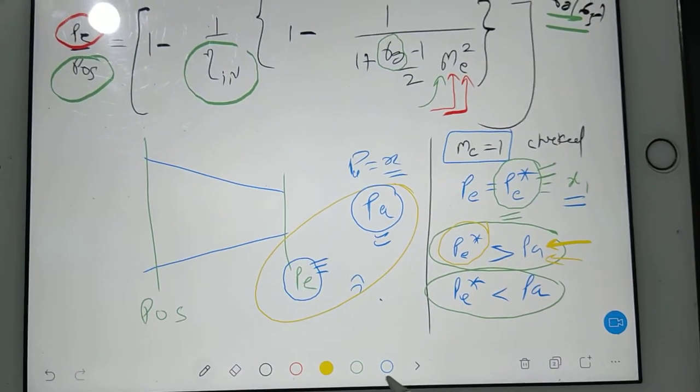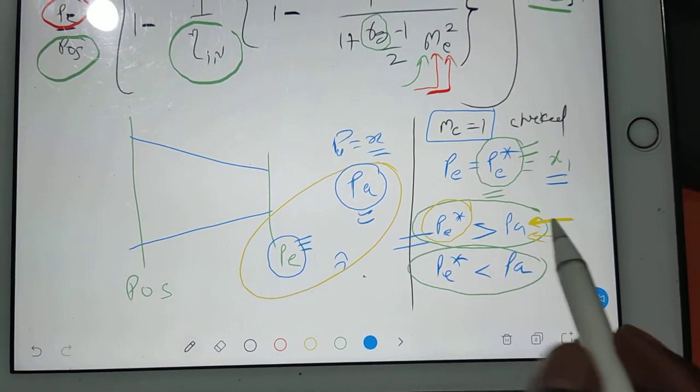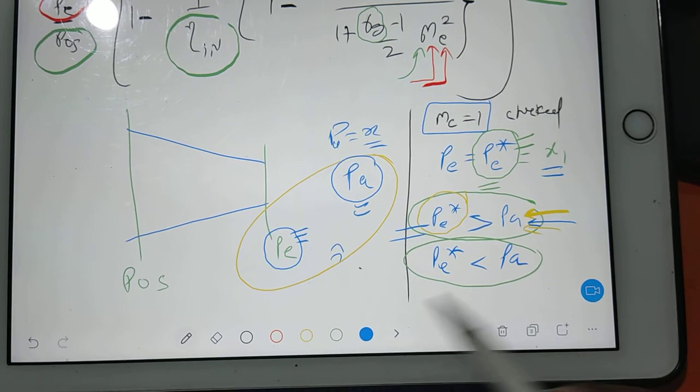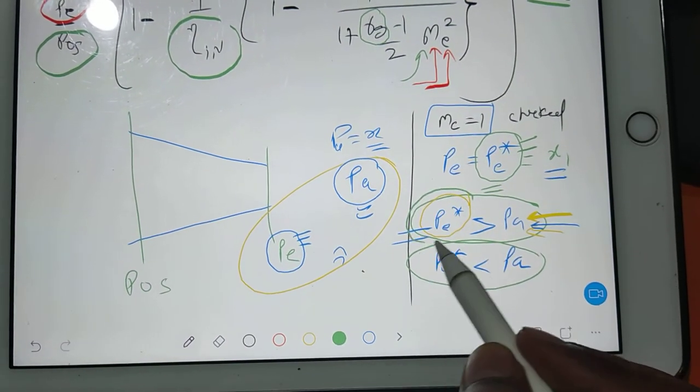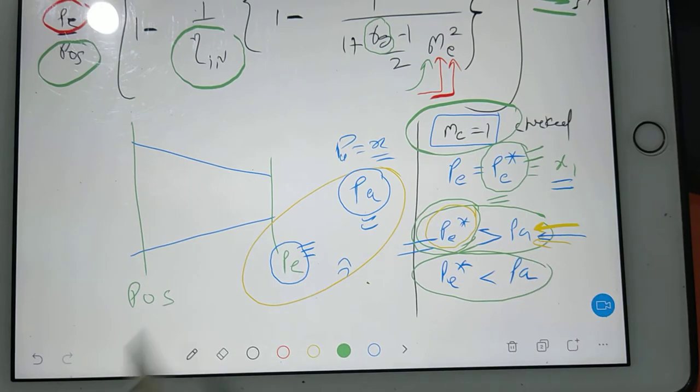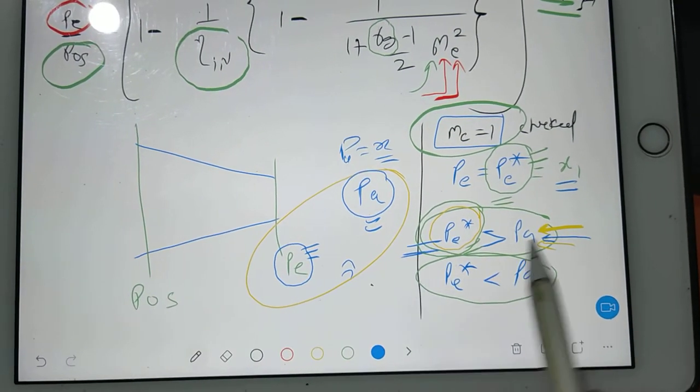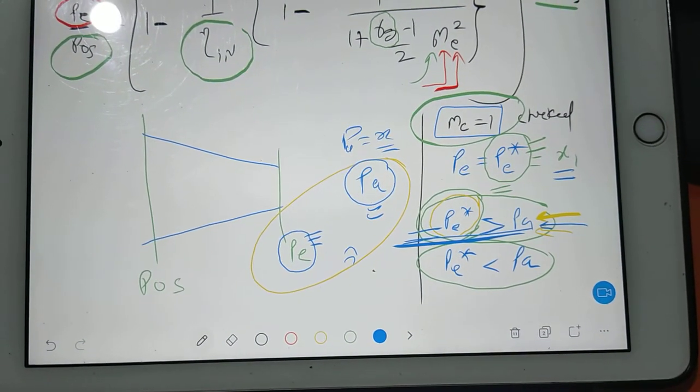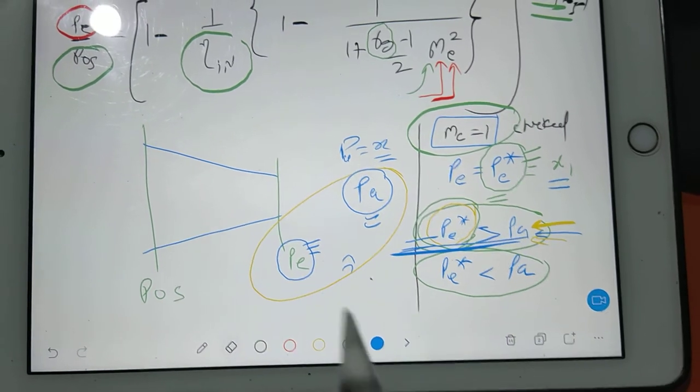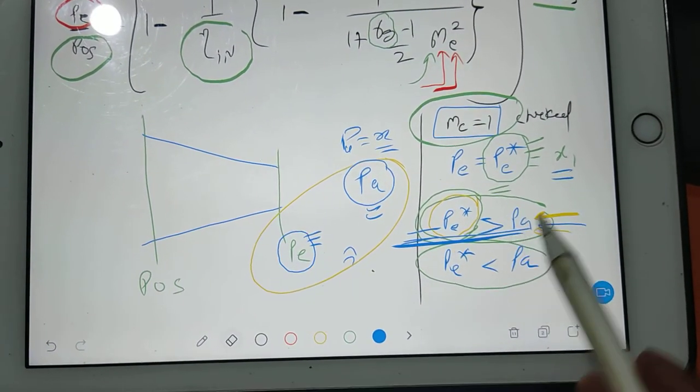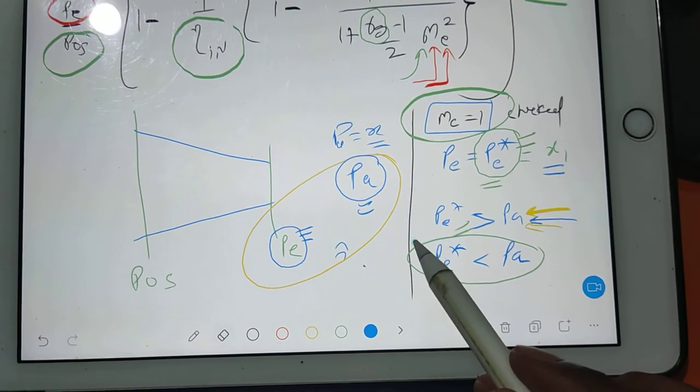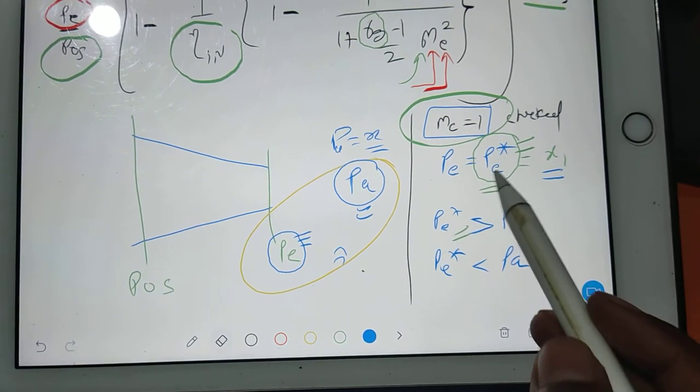If your p star is equal to pa, then for what purpose did you get your p star for M equals 1? Then you will say the nozzle is choked. Okay, if you are getting p star more than pa, then only will you say your nozzle is choked. It means what?